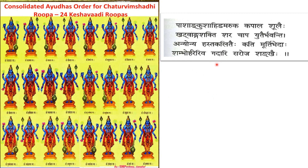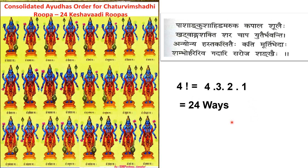As per the same shloka's last line, the forms of Lord Vishnu — with Shankha, Chakra, Gada, and Padma, only 4 attributes — in how many different ways can they be arranged? As per the pattern seen earlier, it is 4 factorial = 4 into 3 into 2 into 1 = 24 ways. That is why the 24 namas of Lord Vishnu are used, including in Sandhya Vandana.